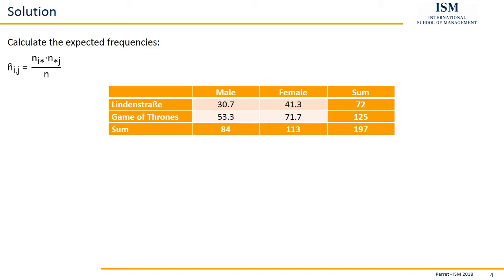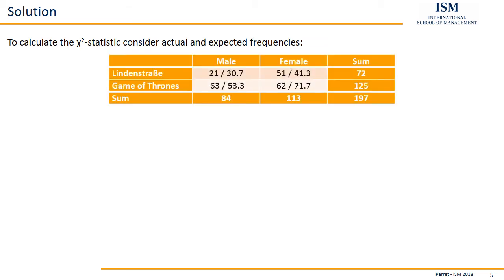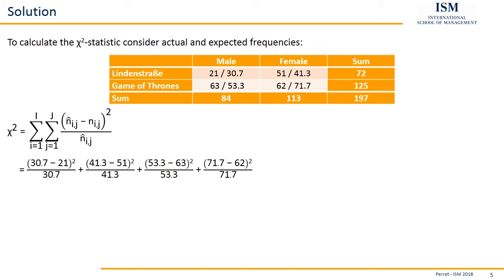We will need those expected frequencies again for the next step, because we are going to calculate the chi-squared statistic. For this we are going to compare and scale the actual and the expected frequencies. We summarize them in one comprehensive table. The chi-squared formula basically says, take the expected value, subtract the actual value. So for male and Lindenstrasse, take the 30.7 minus 21, square the result, and divide it by the expected value, so divided by 30.7. We do this for all four cells we have.